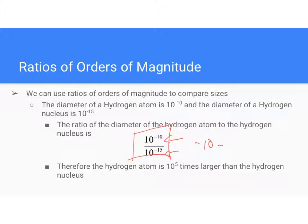But when we divide, as we said, we subtract. And so we subtract the top from the bottom. So negative 10 minus 15, negative 10 minus negative 15, negative 10 plus 15 gives us 5. So that means that the ratio is 10 to the fifth, which means that the hydrogen atom itself is about 10 to the fifth times larger than the hydrogen nucleus.